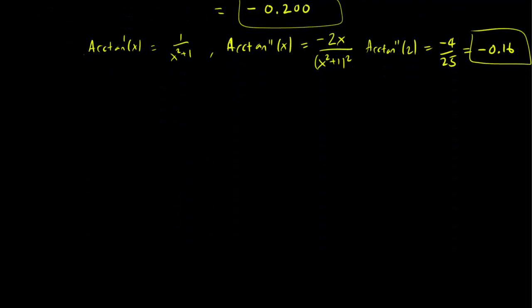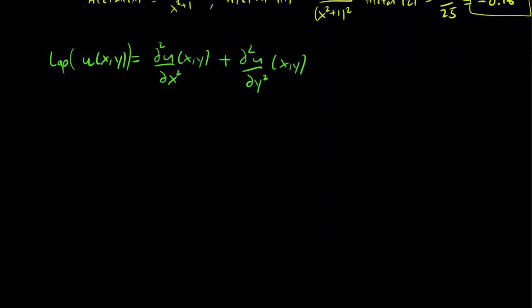Now let's consider partial derivatives. Let's consider the Laplacian of u, which equals the second partial of u with respect to x plus the second partial of u with respect to y. I'm going to use the notation LAP rather than the triangle symbol, because we already have lots of deltas around and I don't want that to be confusing. We can apply our second derivative approximation for both the x and y derivatives.